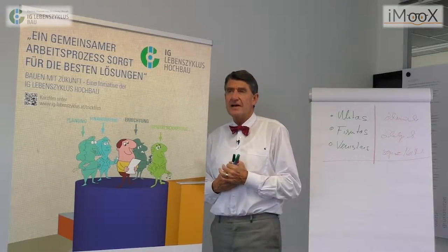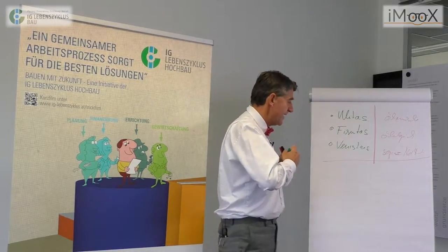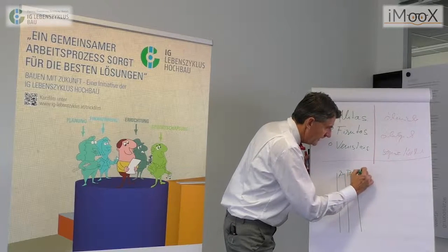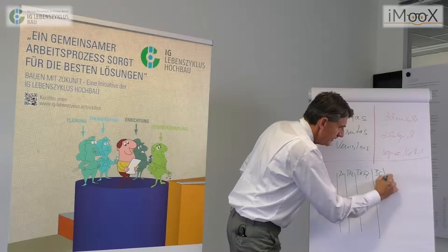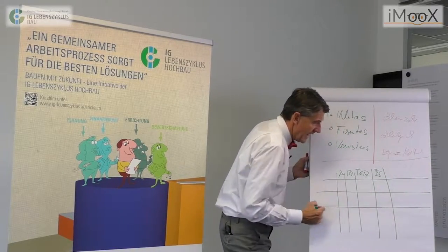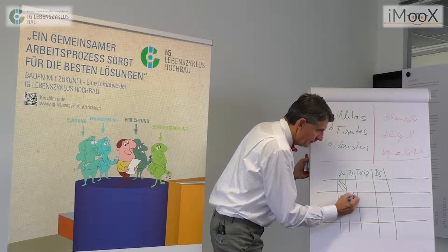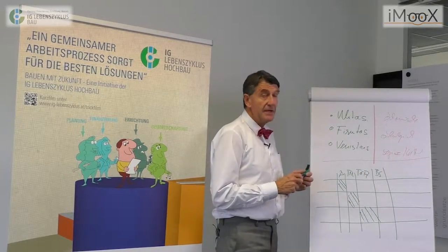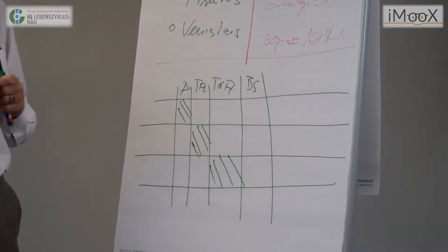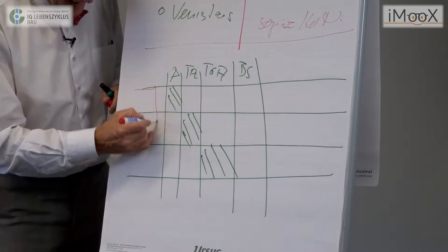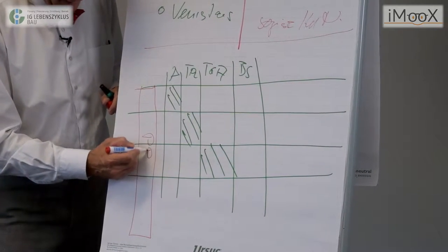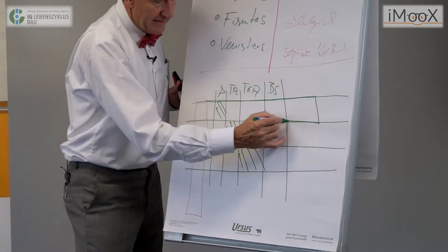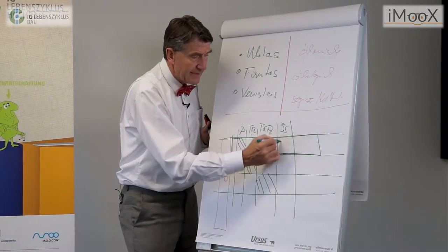Wir in der IG-Lebenszyklus haben es geschafft, die bestehenden Leistungsbilder – die heute alle parallele, vertikale Leistungsbilder sind, die Architekten, Tragwerksplaner, Haustechniker, Brandschutztechniker etc. nach den einzelnen Phasen erbringen – darzustellen. Einer nach dem anderen im Vorentwurf, im Entwurf, in der Einreichplanung erbringen sie parallel ihre Ergebnisse. Und die Funktion Prozessführung Planung kommt nirgends vor. In Wirklichkeit ist die Zukunft ein einziges Leistungsbild: die Prozessführung Planung, die dafür verantwortlich ist, dass wir in jeder Phase durchgängige Ergebnisunterlagen bekommen, egal wer diese beiträgt.